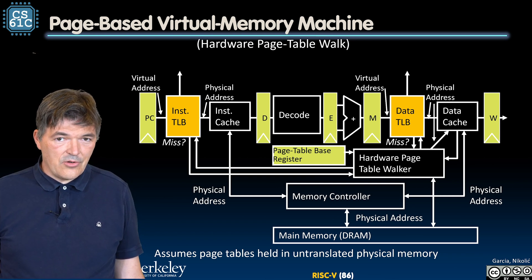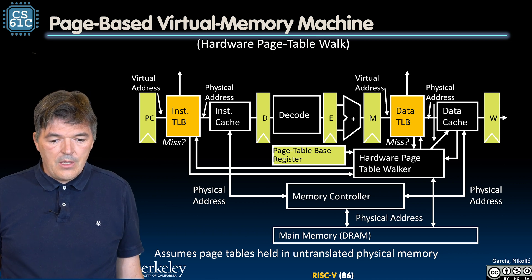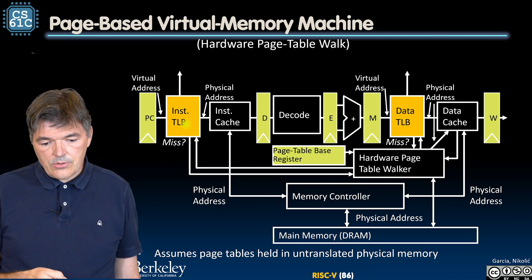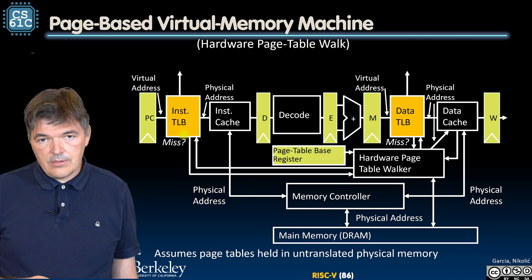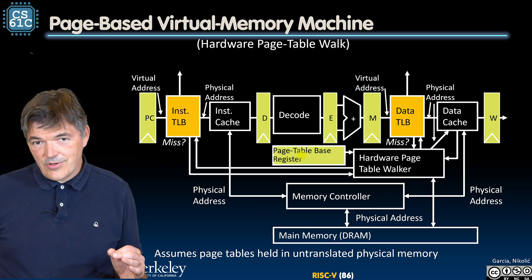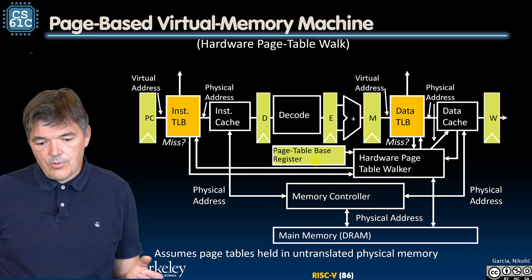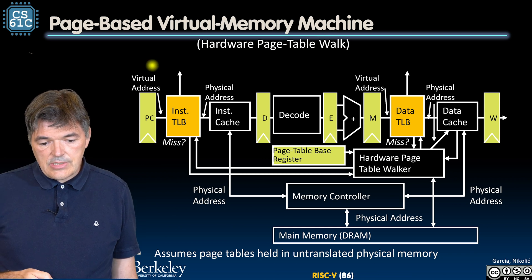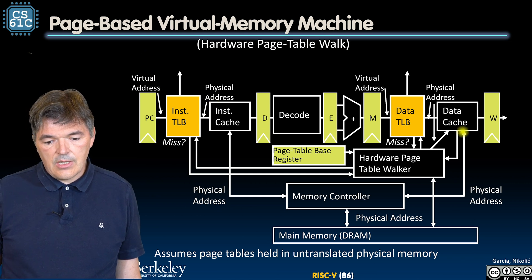Unless you are a really big company that has their own memory controllers. The things that do need to exist in our processor are the support for handling page misses. If there is a miss in a TLB, we need to walk the page tables, and that is typically done as a hardware state machine. It starts from the page table base register that is set for every process being executed, and the page table walker goes and updates the TLBs. In this process we see a translation from virtual addresses to physical addresses at the appropriate locations.